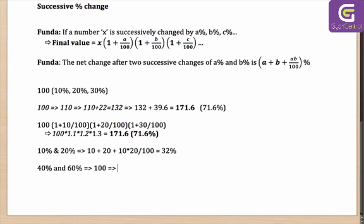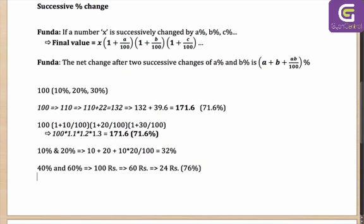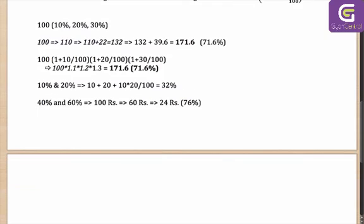We will calculate it by the original method of values. From 100, a 40% change will take it to 60. Another 60% drop — that means a drop of 36 rupees on 60 rupees. Originally we started with 100 rupees; the 40 rupees discount took it to 60 rupees, and another 36 rupees discount took it to 24 rupees, which is a net change of 76%. Now let's do it by the formula A + B + AB/100.